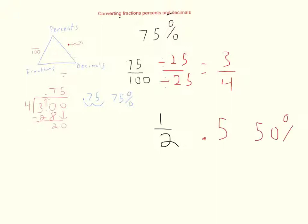Go ahead and try one more. Let's do a little trickier one this time. I would like you to work your way all the way around the circle with 3/8. 3/8, triangle not circle, I'm sorry. 3/8, work your way around right now. All right, you should have gotten 0.375 for your decimal and 37 and 1/2 percent.